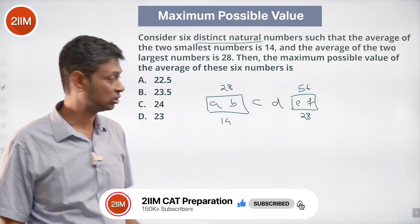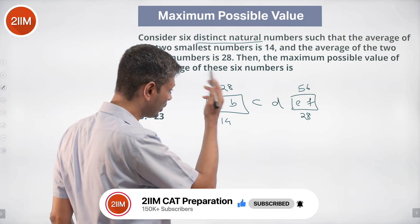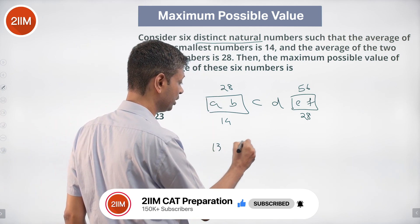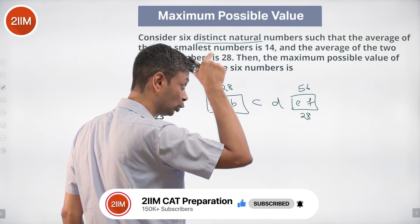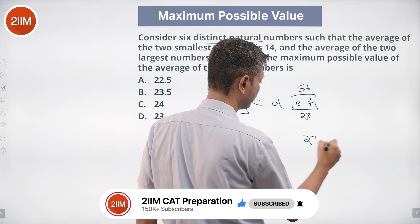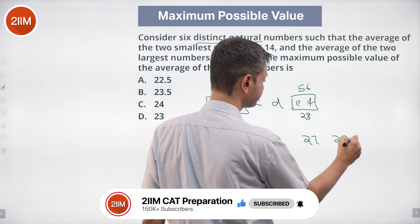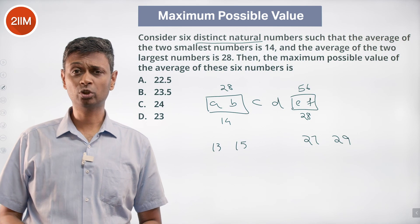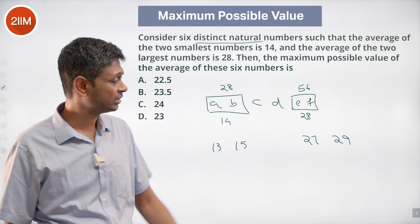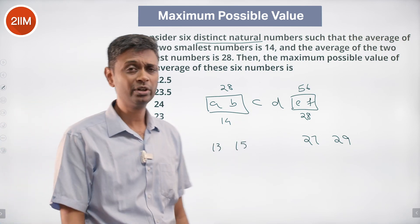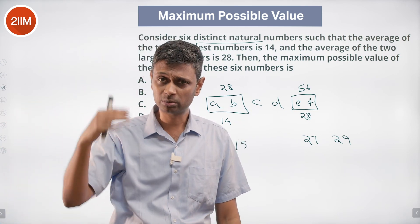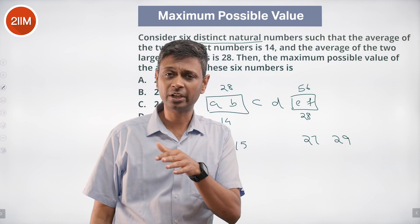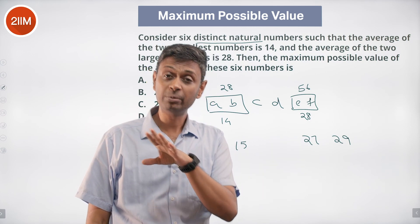We want numbers to be as high as possible. The two smallest can be 13 and 15. For the two largest, I want to put 27 and 29 — rather than 26 and 30 — because I want e to be as high as possible. That way the middle numbers c and d can also be taken as high as possible.